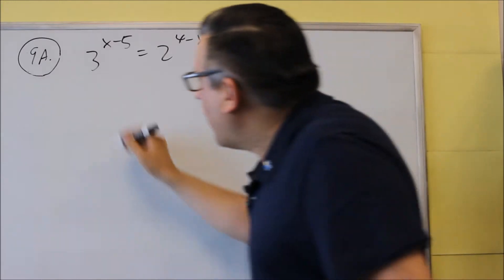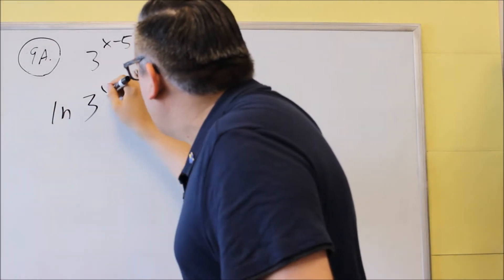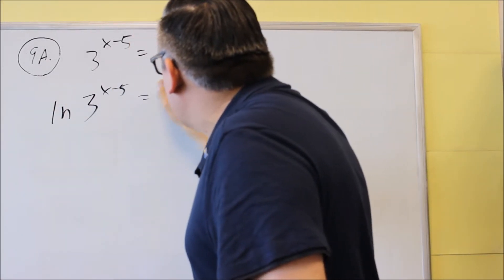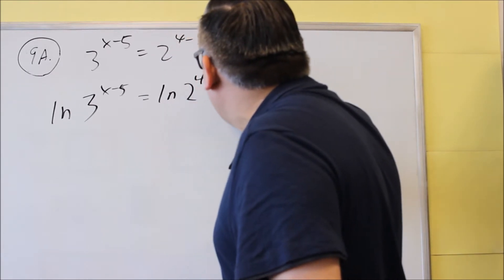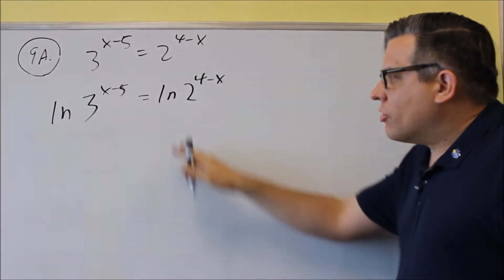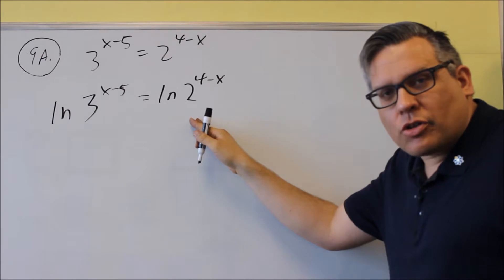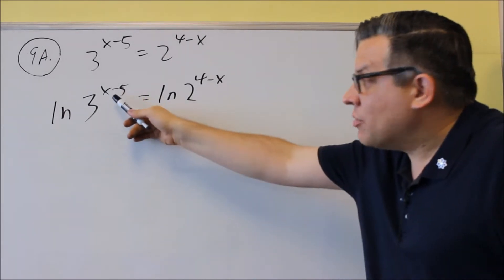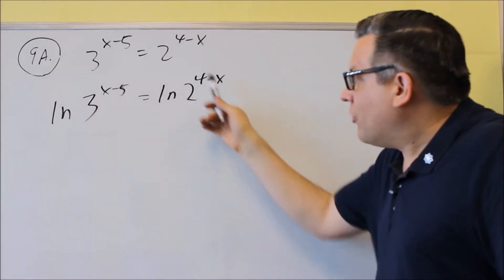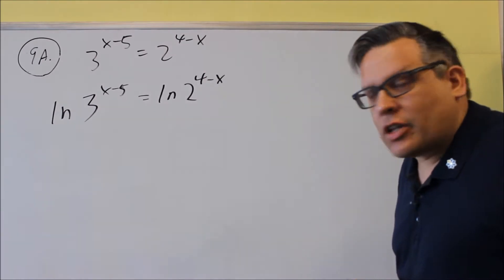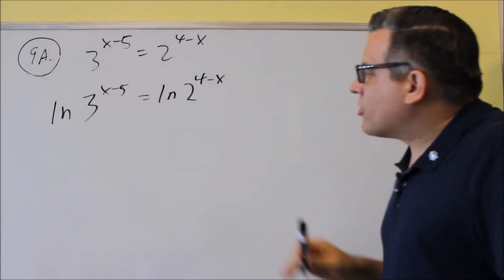So because of that, what I have to do is take the natural log of both sides here. The reason why we're doing this process is because that's going to allow us to move the exponent down in front of the natural log. So by doing that, that's going to free up the powers that we have there.